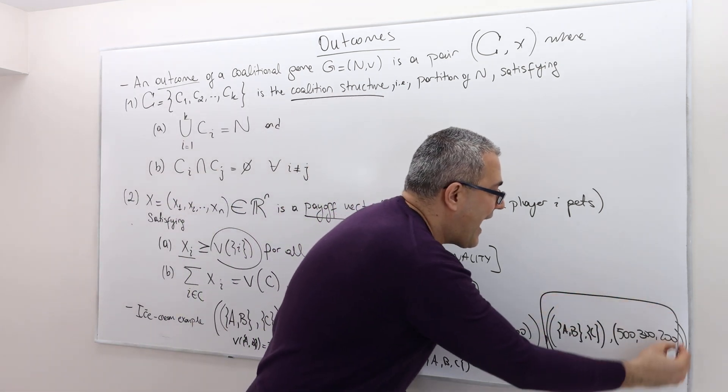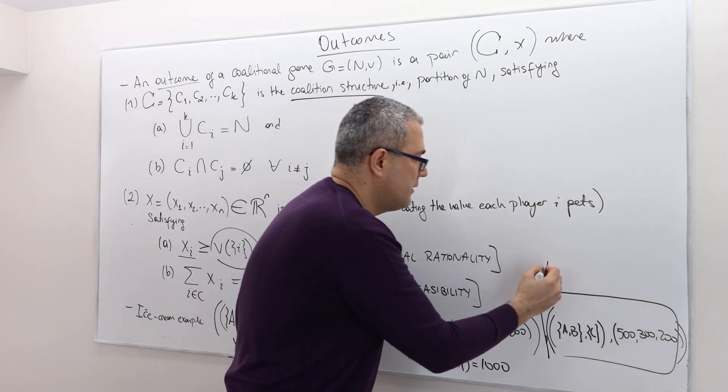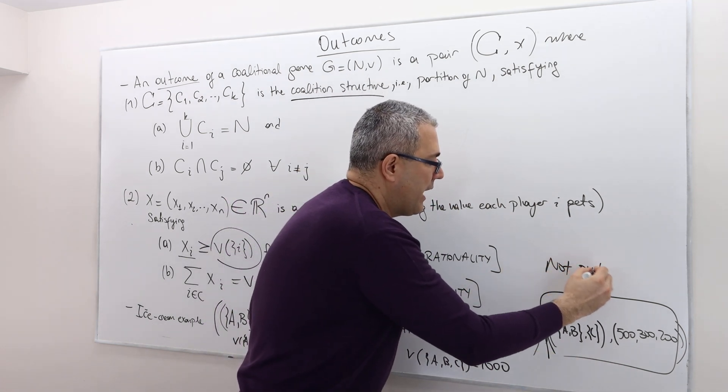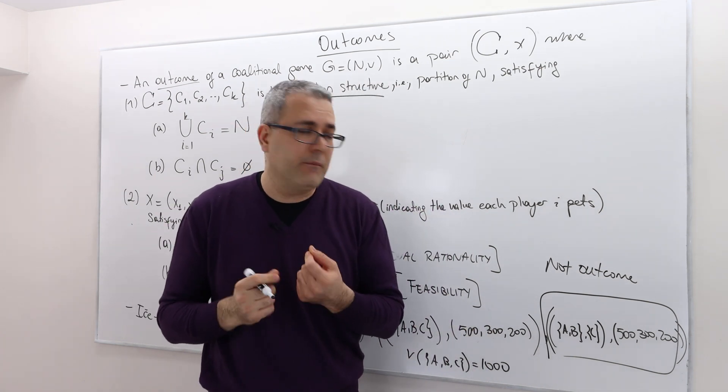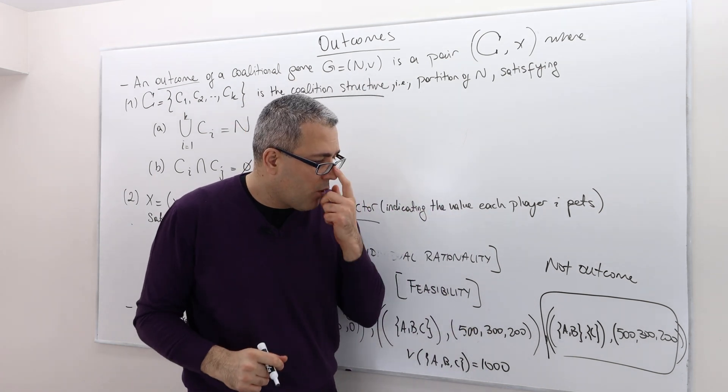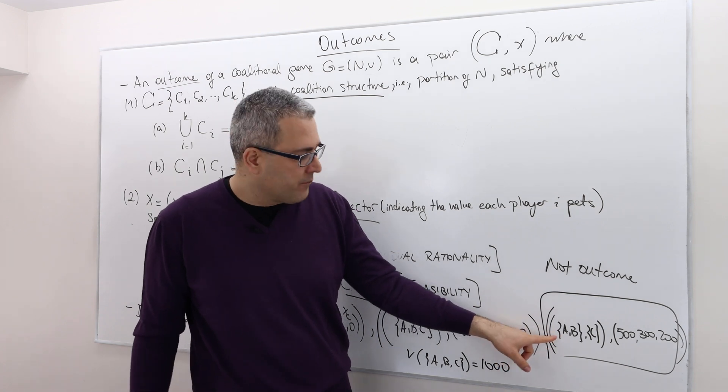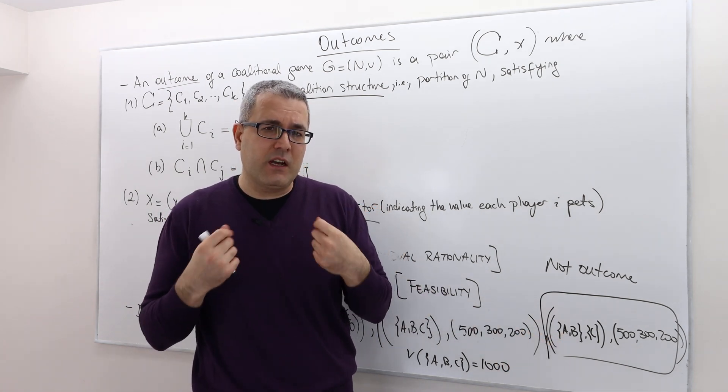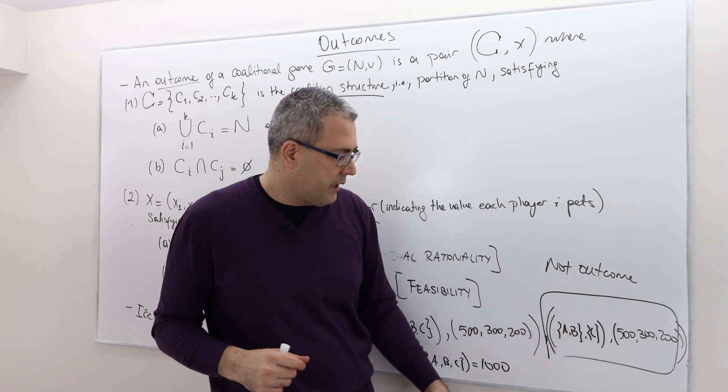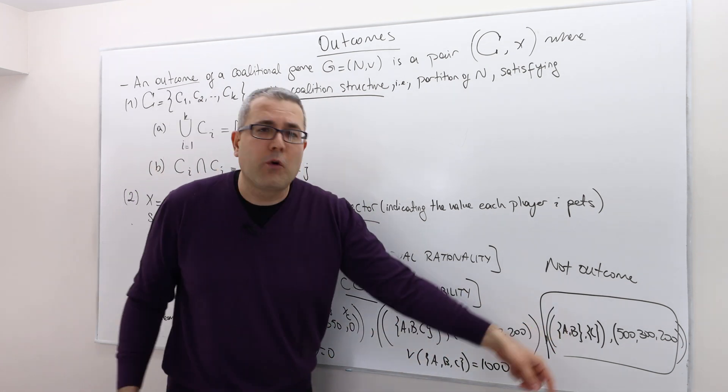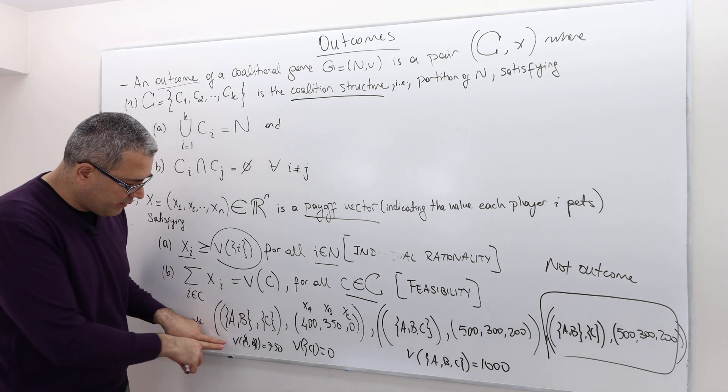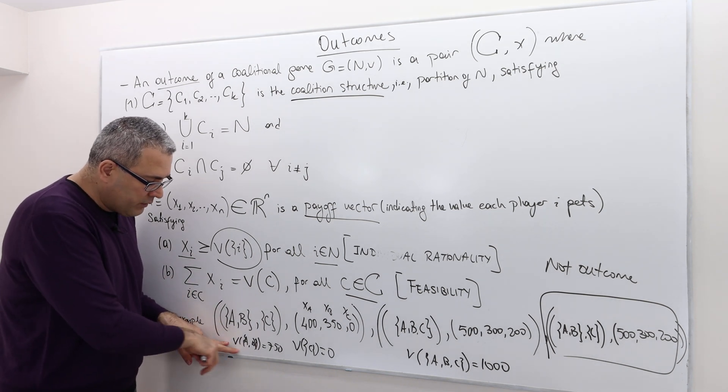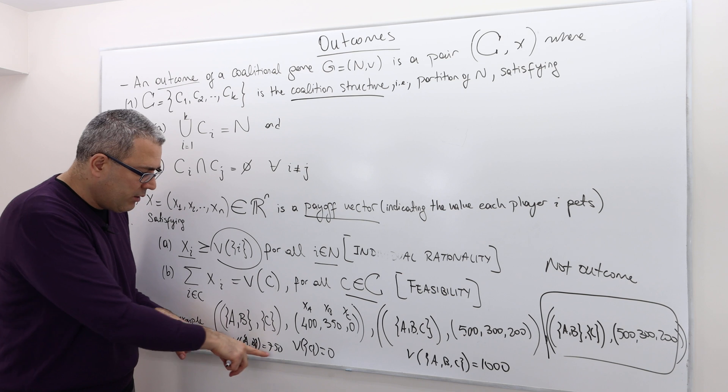Here, this is, however, not an outcome. Not an outcome of the coalitional ice cream game that we described earlier. Why? Well, because A and B get together and form a coalition, and C forms a coalition alone. So it's very much like this one. But if you remember, the worth of coalition A, B was 750.